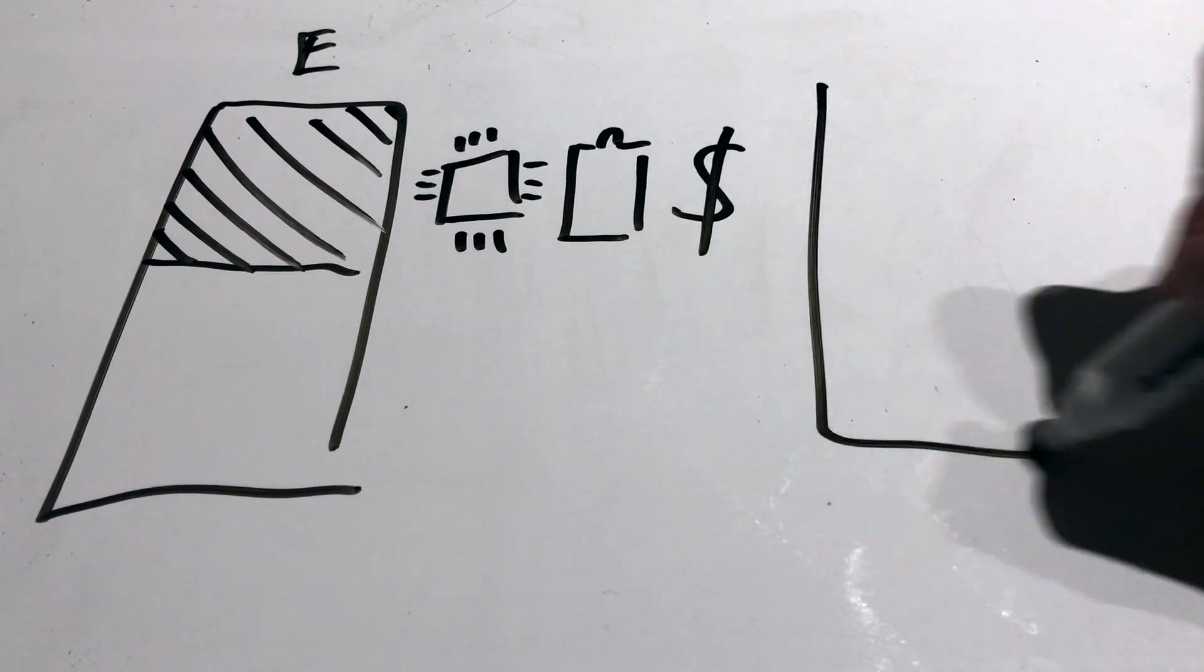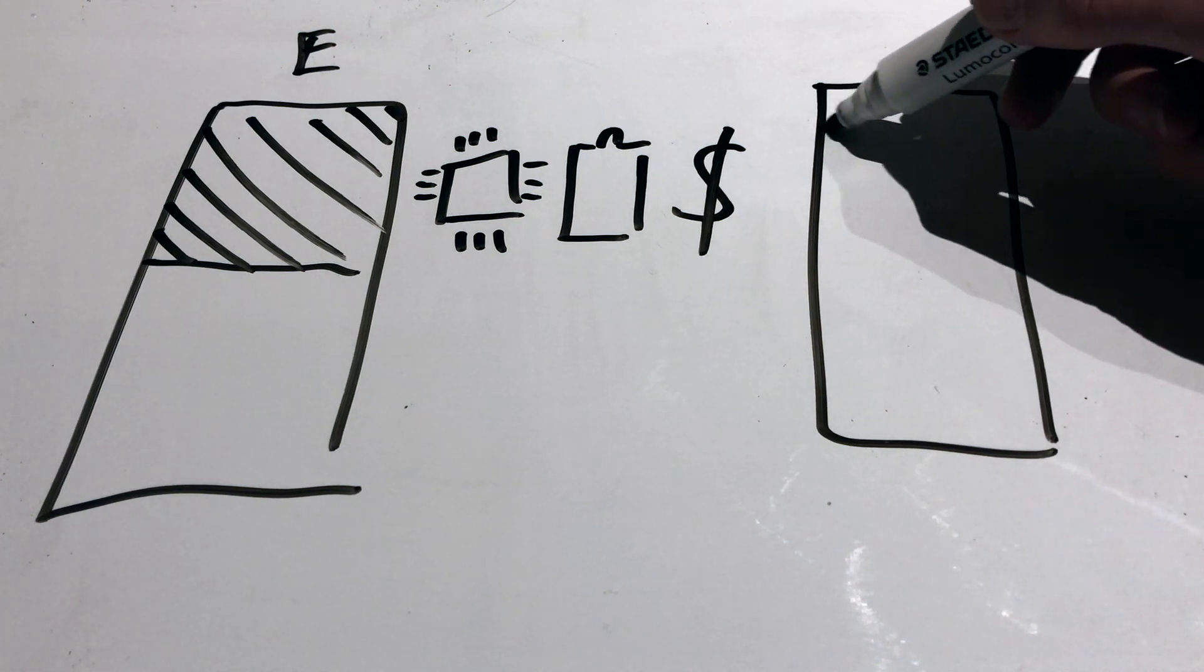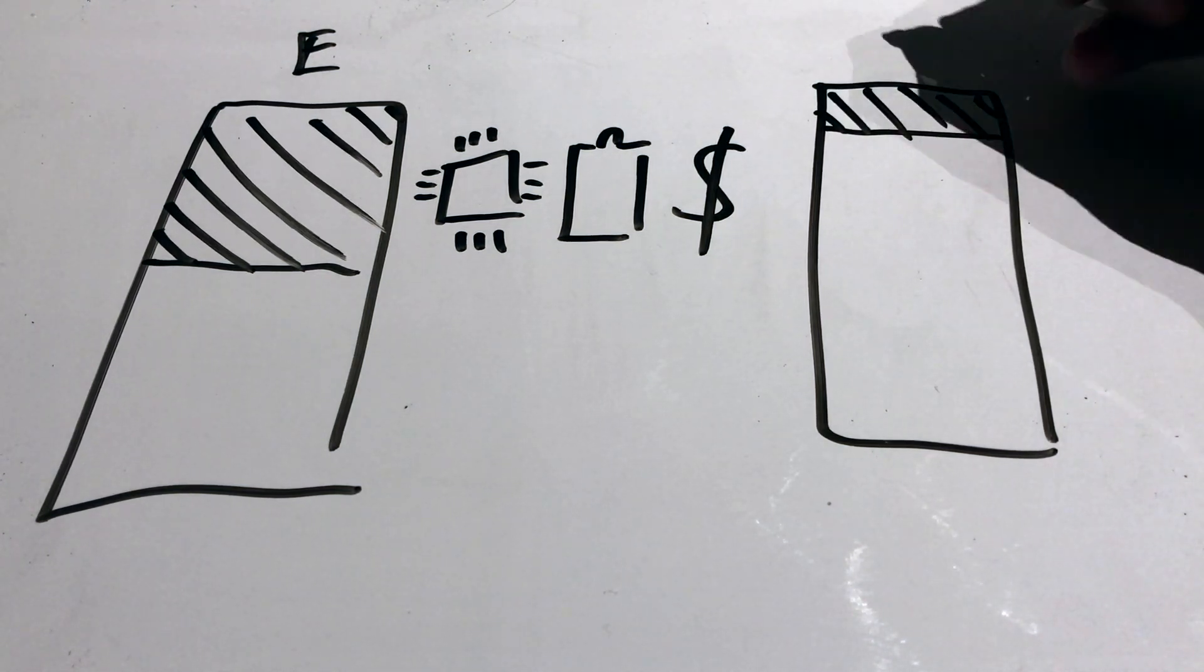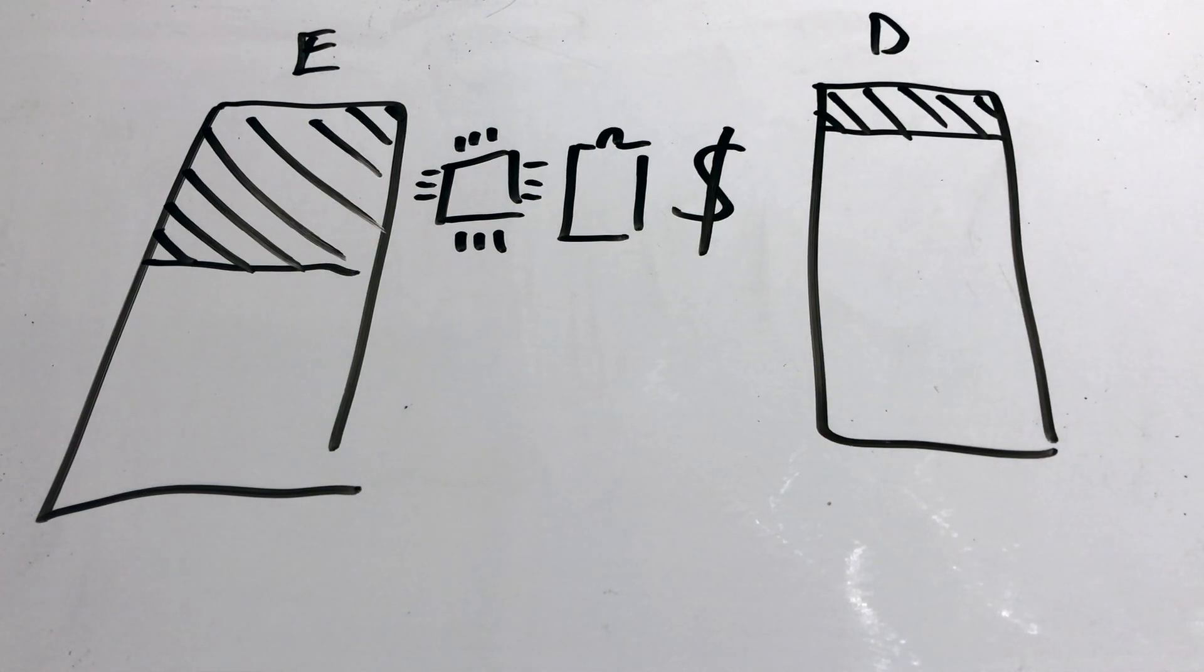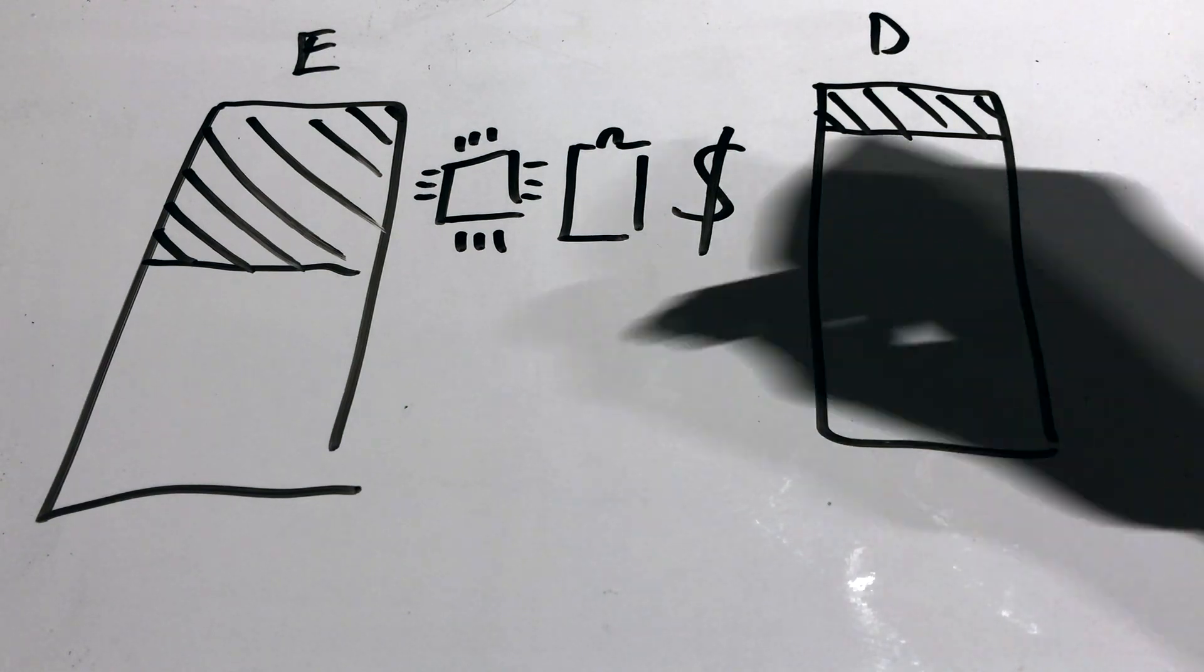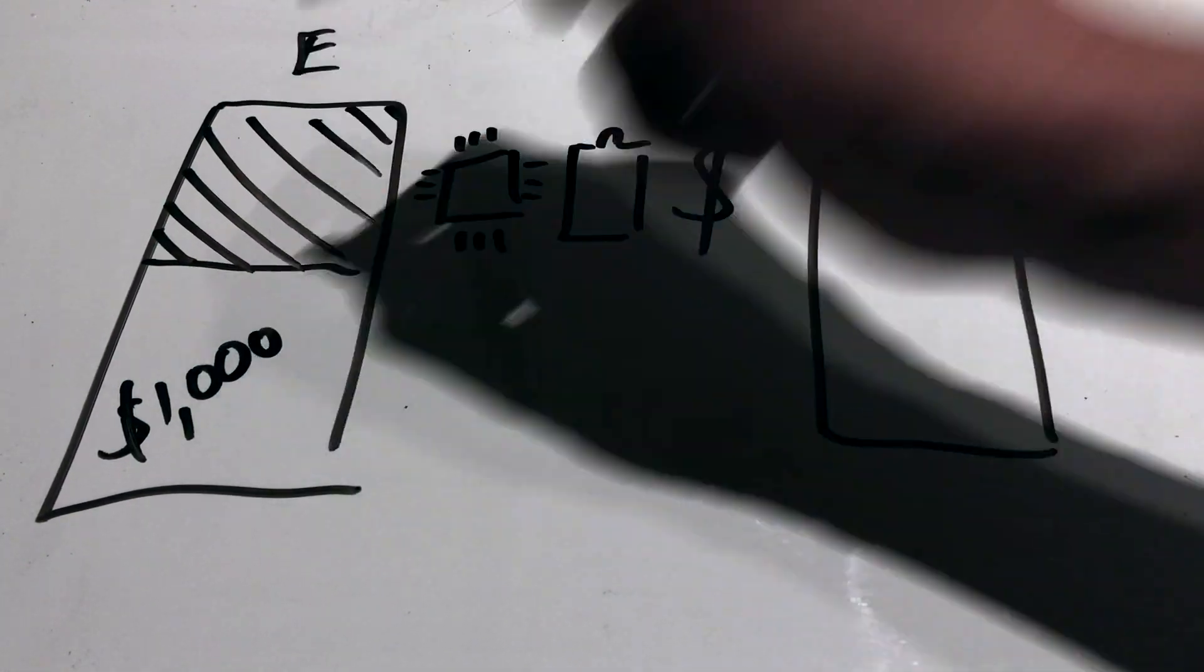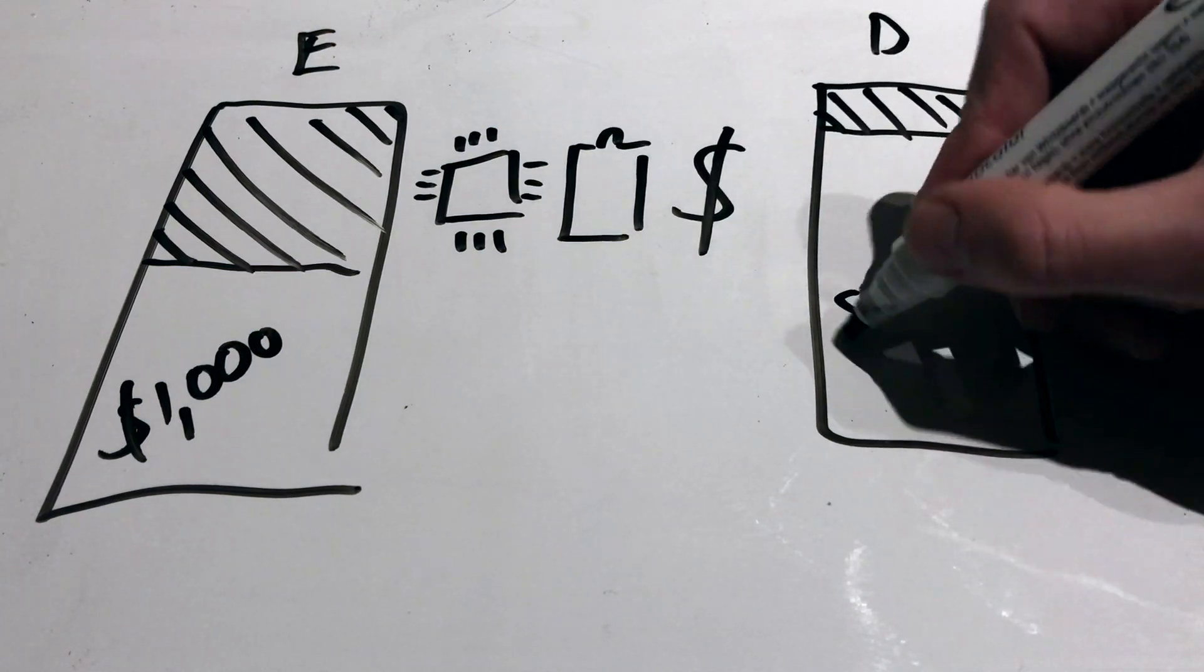Directed AR doesn't quite have the same problem. Because the space is helping it guide to where it should be, more of the processing power can be used for rendering the objects. And this is why everywhere AR typically is thousands of dollars, whereas directed AR is hundreds.